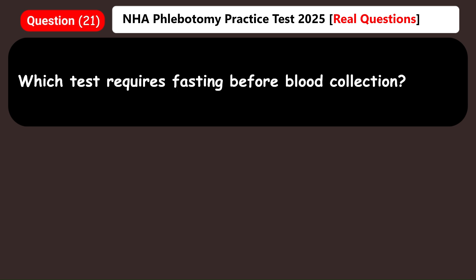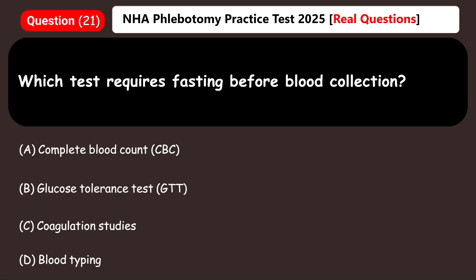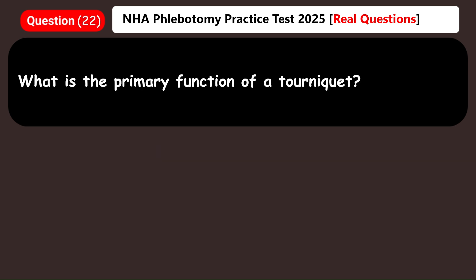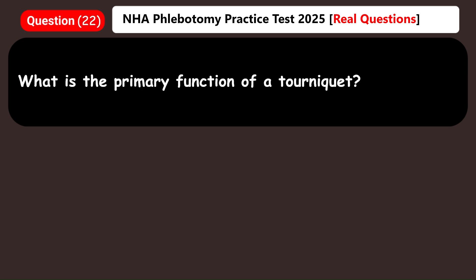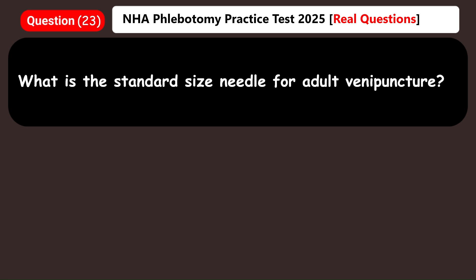Which test requires fasting before blood collection? A) Complete blood count (CBC), B) Glucose tolerance test (GTT), C) Coagulation studies, D) Blood typing. Answer: B) Glucose tolerance test (GTT). What is the primary function of a tourniquet? A) To disinfect the skin, B) To stabilize the needle, C) To make veins more visible, D) To prevent blood flow. Answer: C) To make veins more visible.